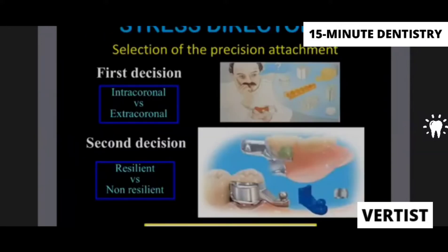They can be intracoronal, extracoronal, resilient, or non-resilient. Precision attachments and semi-precision attachments are the ones particularly used as stress directors in Class 1 and Class 2 situations. What they do is allow some form of movement, because a very rigid connection would be detrimental to your abutment tooth.